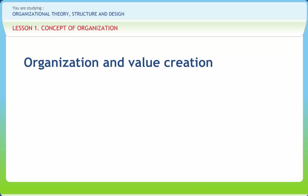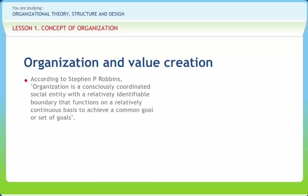An organization is a response to and a means of satisfying some human need. Value creation is the primary aim of any business entity. According to Stephen P. Robbins, organization is a consciously coordinated social entity with a relatively identifiable boundary that functions on a relatively continuous basis to achieve a common goal or set of goals. An organization creates value through a different stage process, and each of these stages is affected by the environment in which an organization operates.